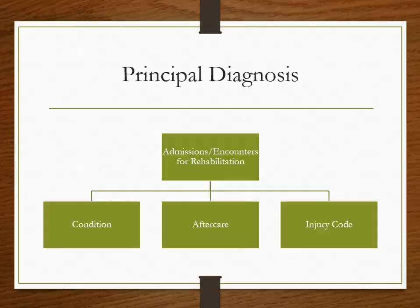Lastly: admissions and encounters for rehab. When the sole purpose is rehab, sequence first the code for the condition for which the service is being performed. If the condition for which rehab is being provided is no longer present, report the appropriate aftercare code as the first-listed or principal diagnosis — 'first listed' applies to outpatient. However, for rehab services following active treatment of an injury, assign the injury code with the appropriate seventh character to identify this as a subsequent encounter.